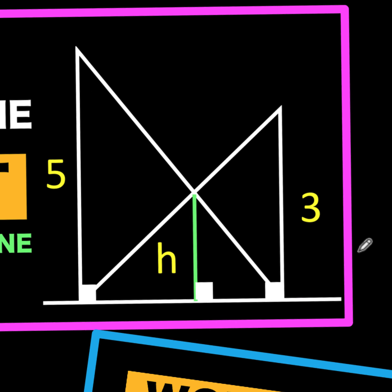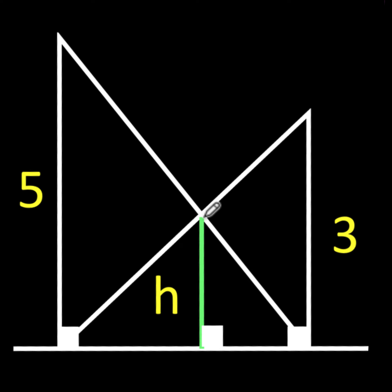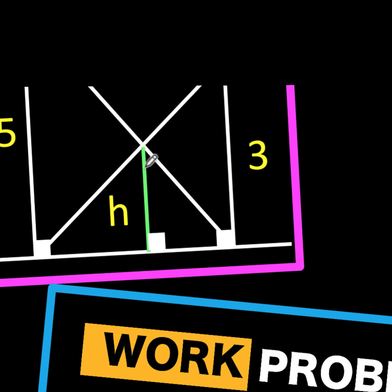In the first problem, we talk about the height of two poles being 5 units and 3 units respectively. From the top of the first pole, we connect a straight wire to the foot of the second pole. And from the top of the second pole, we connect it to the foot of the first pole. And from the point of intersection of the two wires, we draw this green line that is perpendicular to the ground. We want to find the height of this green line.